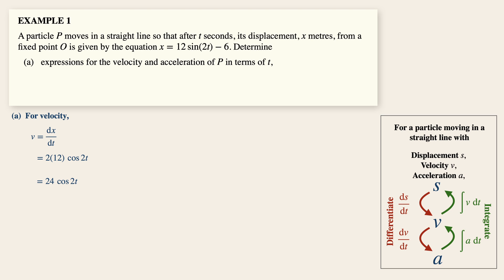To get the acceleration, simply differentiate the velocity expression again with respect to time, and we can easily get minus 48 sine 2t. Now if you have difficulties with trigon derivatives, do check out the link in the description box below so that you can get up to speed in this.